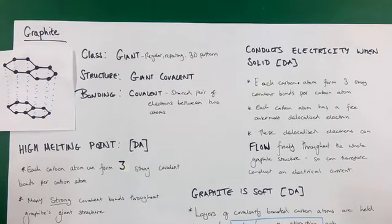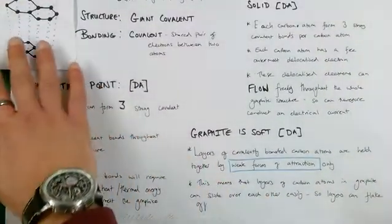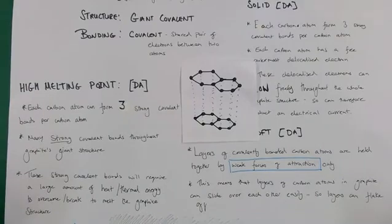Now I'm going to consider the various properties of graphite, starting with its melting point. Graphite has an exceptionally high melting point. Actually, it usually sublimes upon heating, so it doesn't even have a melting point per se. But for devil's advocate, let's say it does have a high melting point.